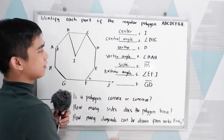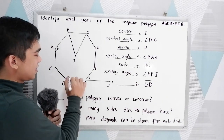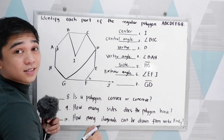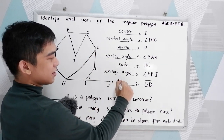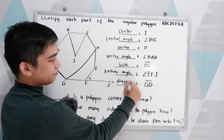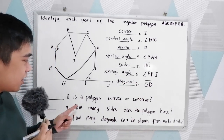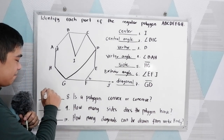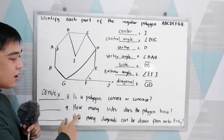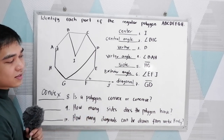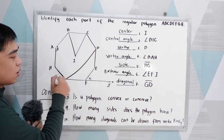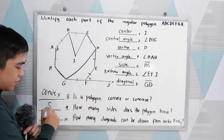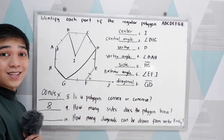Number 7: segment GD, connecting G to D, is a diagonal. Number 8: is the polygon convex or concave? The answer is convex. Number 9: how many sides does the polygon have? Counting 1, 2, 3, 4, 5, 6, 7, 8 — we have 8 sides, making it an octagon.